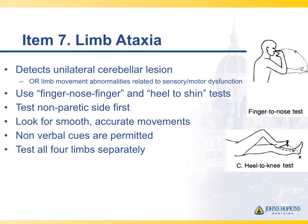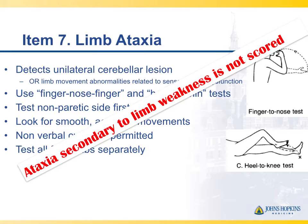Limb ataxia is assessed to look for cerebellar lesions. Ataxia must be out of proportion to the weakness in order to give points, because people can be ataxic simply because they're weak. Use finger to nose and heel to shin to assess each limb separately. Ataxia is only scored if it's present — if the patient's paralyzed, they don't get any points.